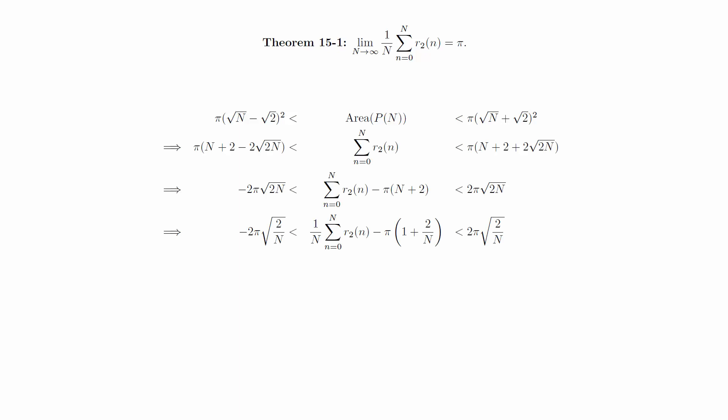Once we've rewritten the equation in this form, we see that the upper and lower bounds approach zero as n approaches infinity, so we must have that the middle quantity does as well. But that's equivalent to our desired result.